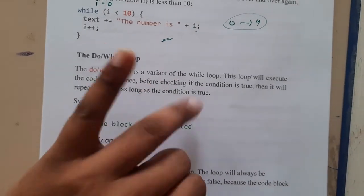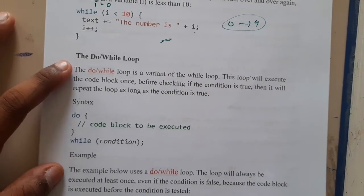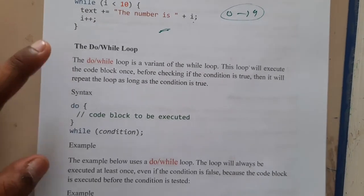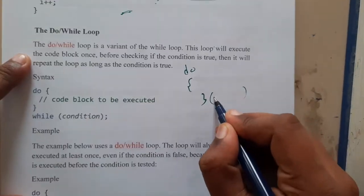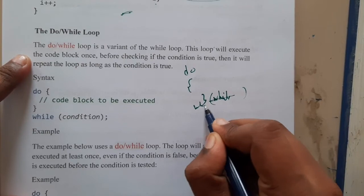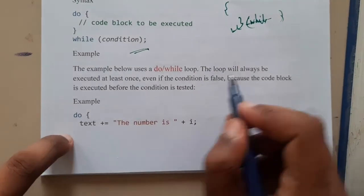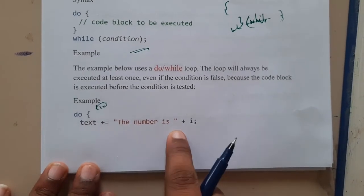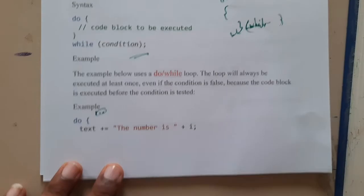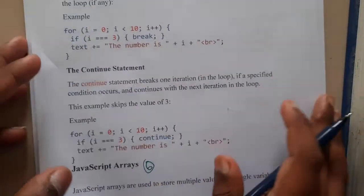The do-while loop is a bit different compared to while and for loops. Both while and for check the condition before executing. But do-while will first execute the code block, and then check the condition — that is the reason it is called 'do while'. The syntax is: 'do { ... } while (condition);'. You initialize 'i = 0' before the loop, and it continues from 0 to 9 until the condition — say 'i < 10' — becomes false.